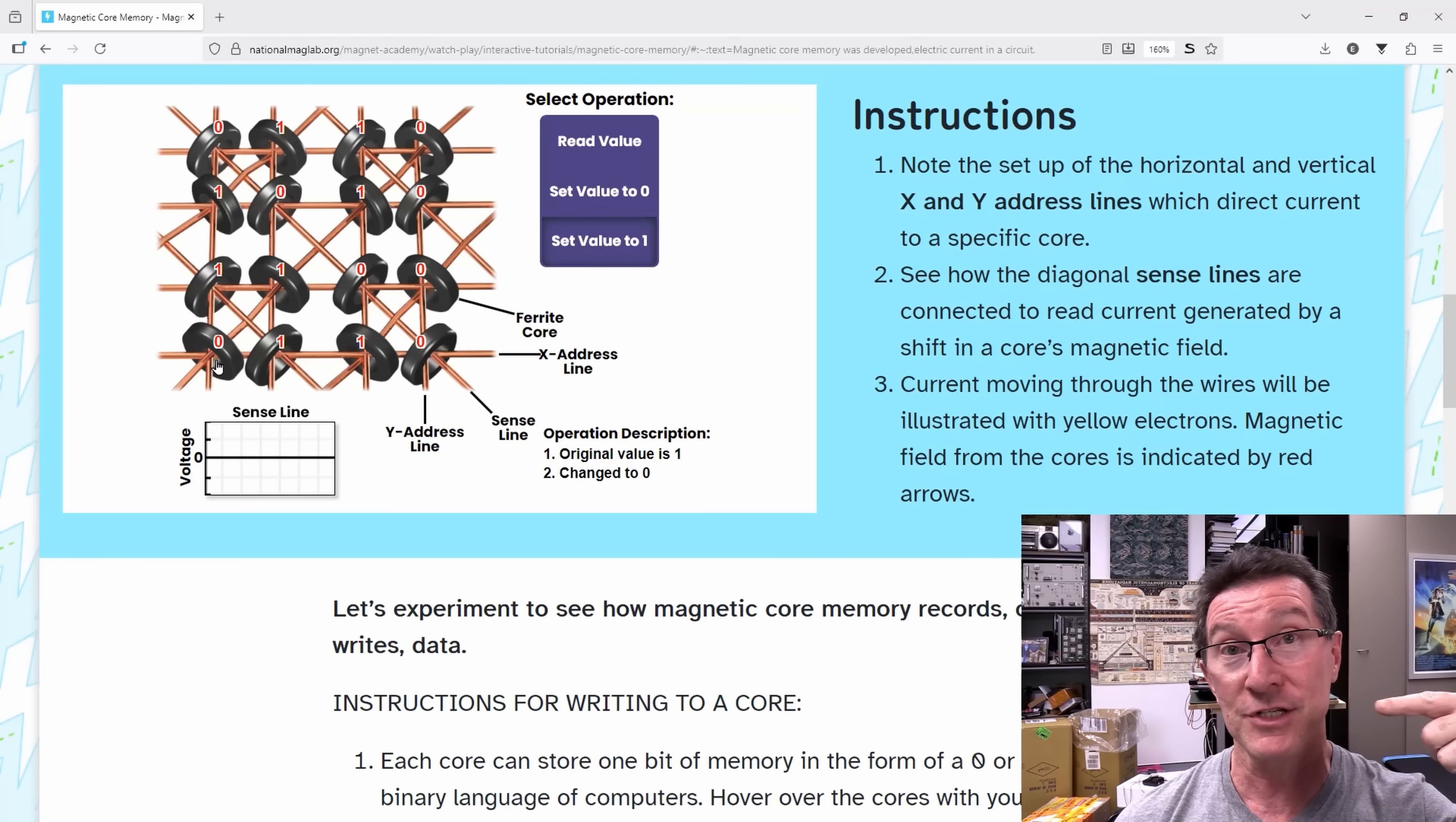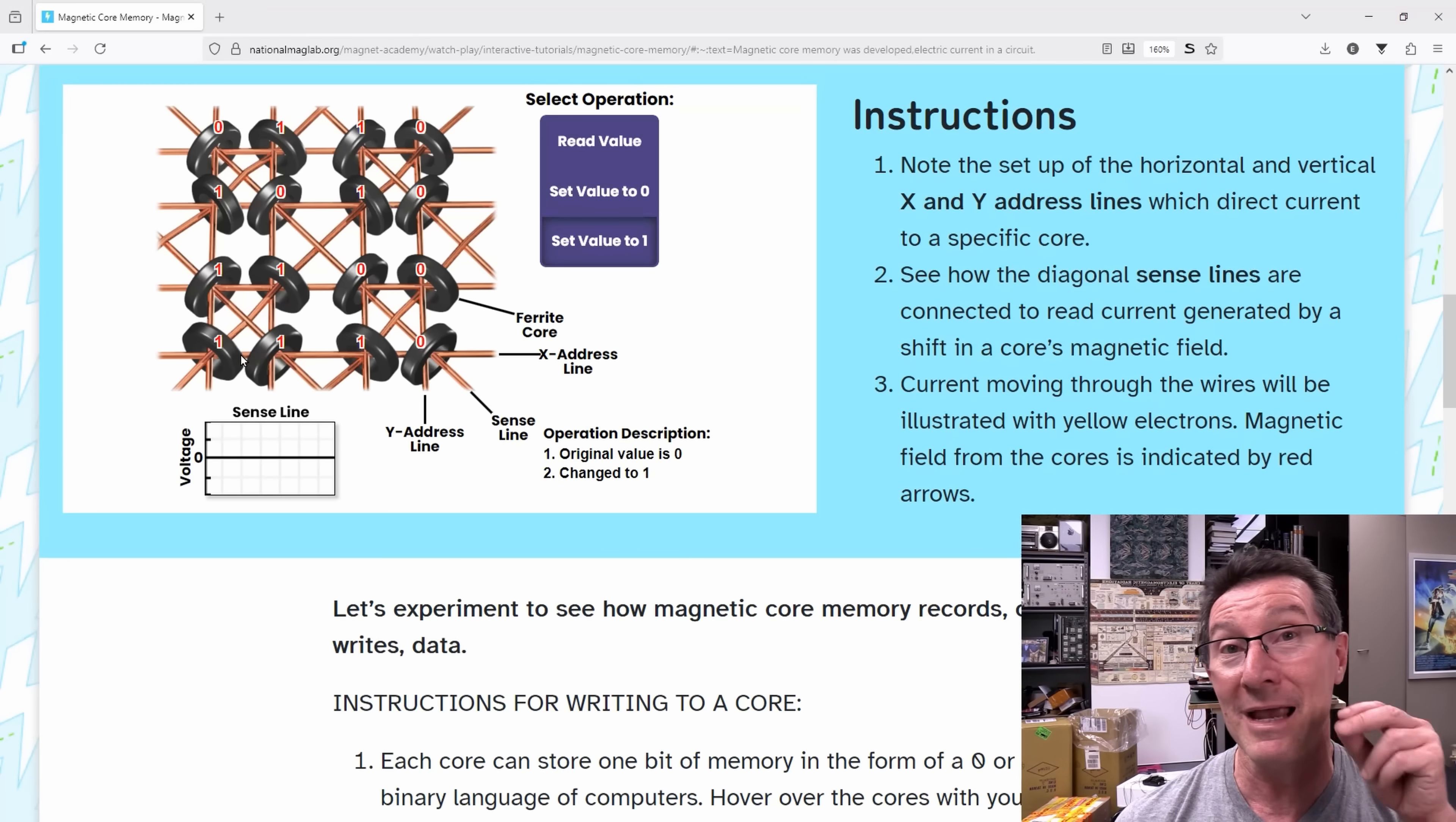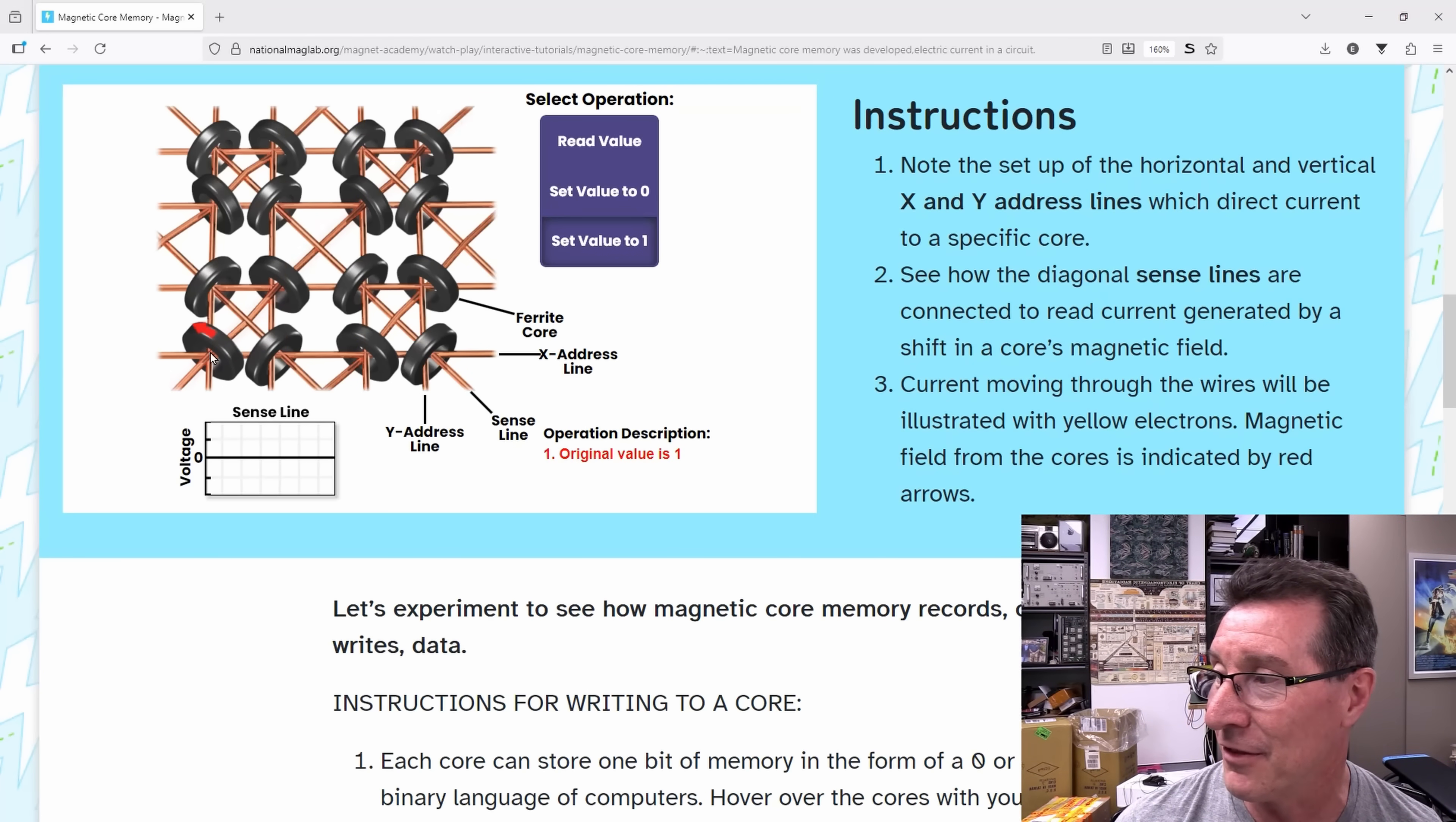It's currently set to 0. So we have to select this particular X row and this particular Y column. Then we put a pulse of current through that. If we set that value to 1, you'll see that it's flipped it in the direction. It started going in one direction like your magnetic right-hand rule, and then it flipped it in the other. The original value was 0 and changed it to a 1. So we've stored a 1 in the magnetic field in that ferrite ring.